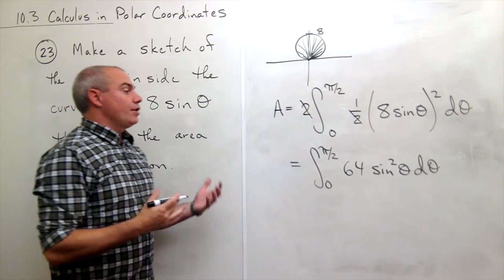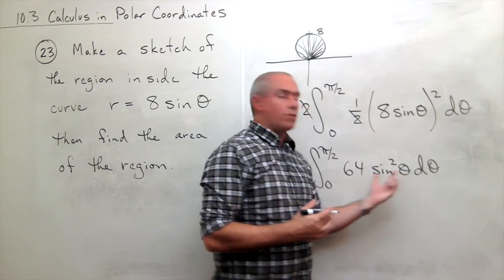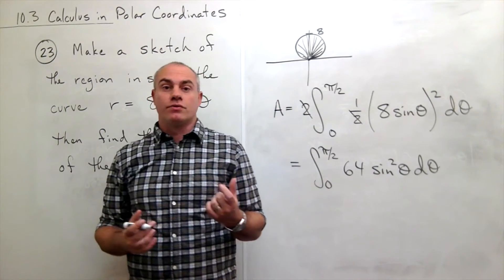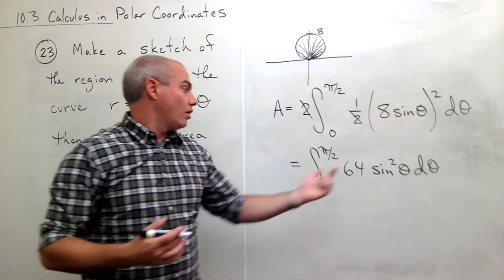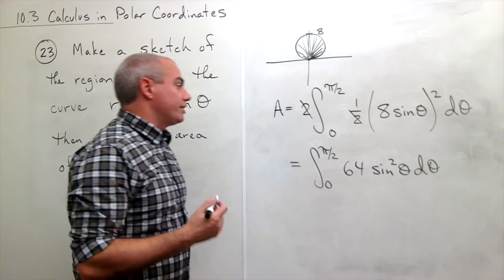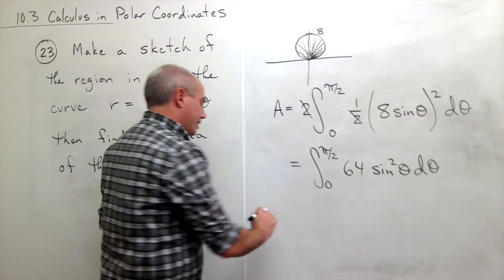Okay, I don't know how to take the antiderivative of sine squared of theta so I need to use a half angle identity on sine squared of theta. So let's rewrite that using the half angle identity.